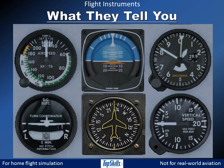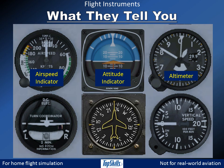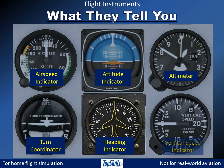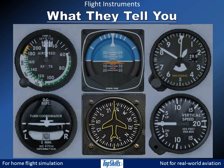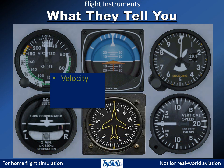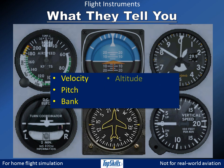The flight instruments are the Airspeed Indicator, Attitude Indicator, Altimeter, Turn Coordinator, Heading Indicator, and Vertical Speed Indicator. They tell you about the status of your aircraft in several respects: velocity, pitch, bank, altitude, heading, and rates of changes regarding these conditions.